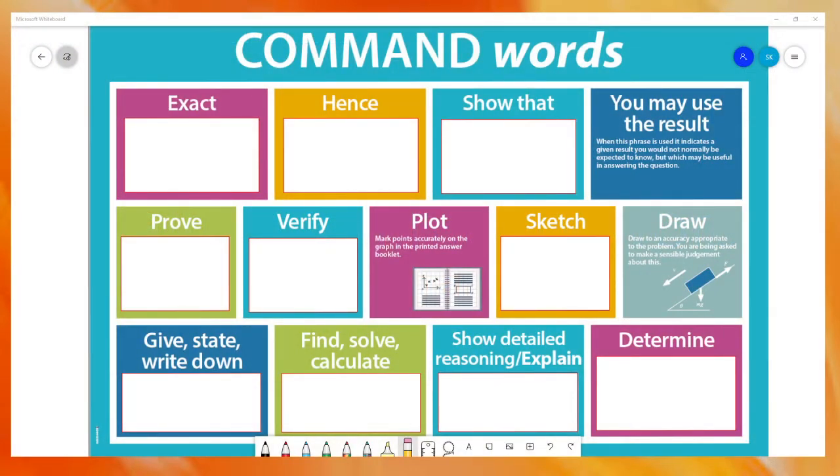So you should have this poster available to you. You can see we've already given you some answers there. You may use the result normally indicates a given result that you would not be normally expected to know, so something you've used either already or you are just told in the question. Typically this comes from proof where a question will say prove this but you can use this idea as well.